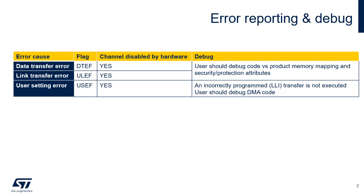A transfer error occurs in the event of any one of the following situations. During a single or burst data transfer from the source to the destination, DTEF is set. During an update of a DMA channel register from the programmed LLI in memory, ULEF is set. During a tentative execution of a DMA channel with an unauthorized setting, USEF is set.